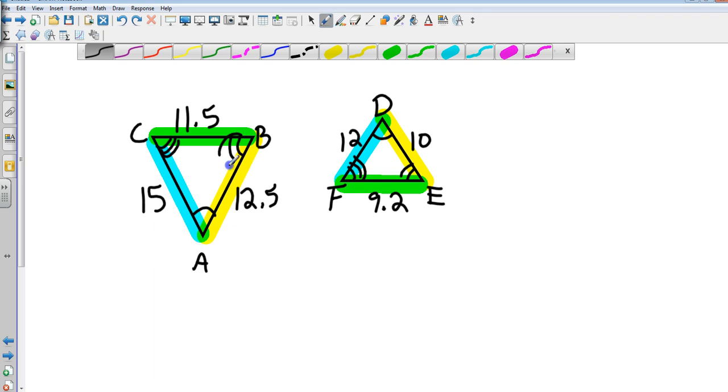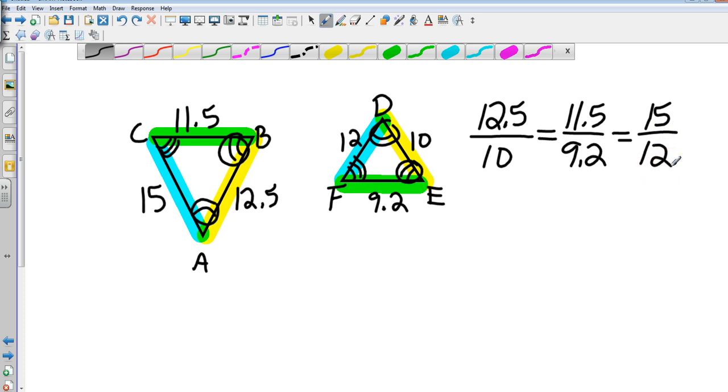So 12.5 is going to compare to 10, and then 11.5 is going to compare to—where's my green one—9.2. And then that leaves my final one as 15, and it's going to compare to 12. Notice that all of the numerators are from the same triangle, all of the denominators are from the same triangle, and that's the way it has to be.